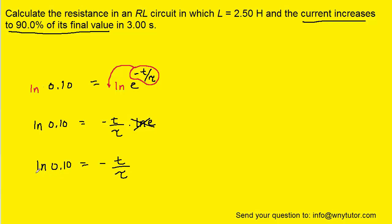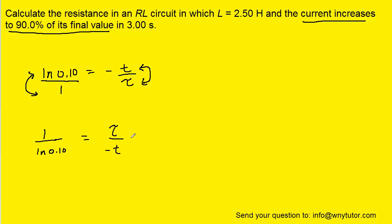Next, it might help to put a 1 underneath the ln term. And when we do that, we can see we have a fraction on the left side, a fraction on the right side. We can actually flip both fractions, or invert them, and that's going to bring tau from the denominator up to the numerator. Remembering that our goal was to solve for tau, we can multiply both sides of the equation by negative T, and that way they cancel on the right-hand side.